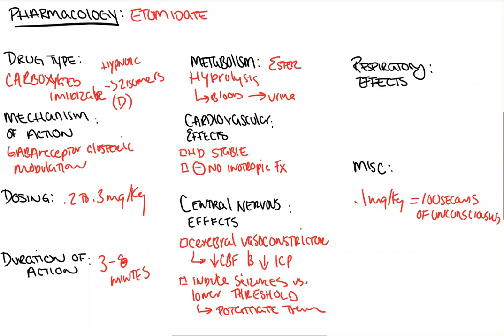On top of that, another big exam topic is that etomidate can cause myoclonic movements, or myoclonic jerking of the patient. So for neuro: vasoconstriction in the brain, seizures, and myoclonus.